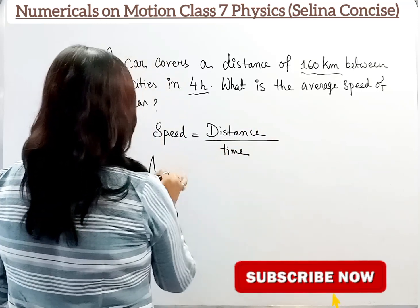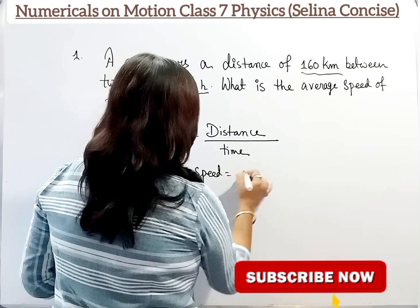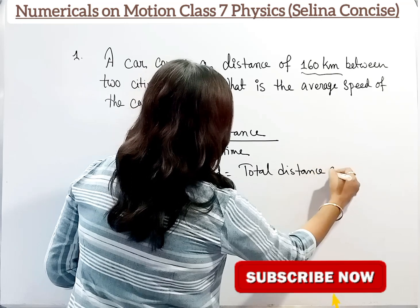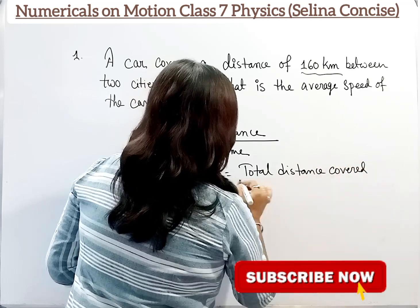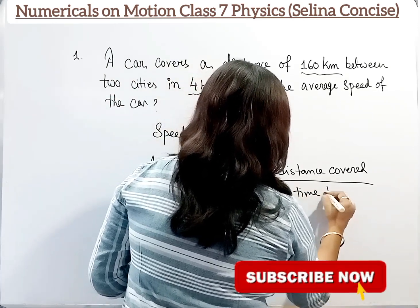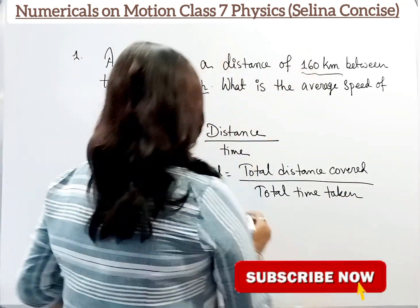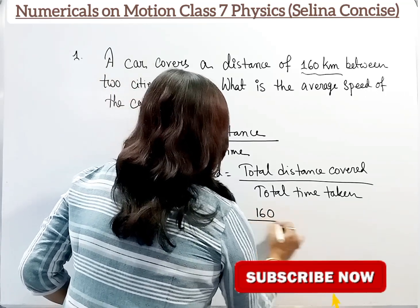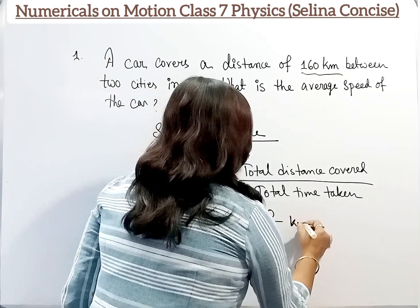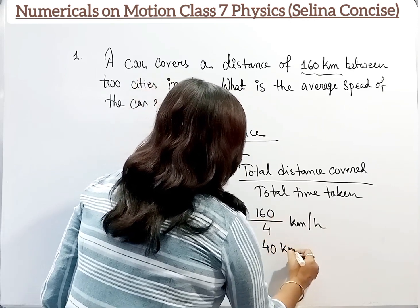Now we know that speed equals distance by time, and average speed equals total distance covered by total time taken. Distance is 160 km and total time is 4 hours. So 160 divided by 4, unit will be km per hour. After reducing, the answer is 40 km per hour.